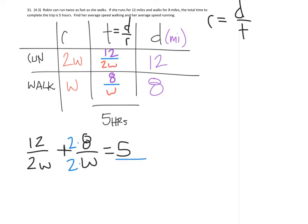5 has a denominator of 1, so we're going to have to multiply it by 2W, just like this.